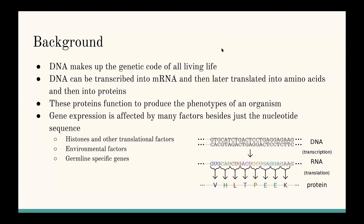I'm going to start with some background information. As you may have learned before, DNA makes up the genetic code of all multicellular organisms on our planet. The central dogma of molecular biology is that DNA can be transcribed into an mRNA sequence, and then once in that mRNA sequence, it can be translated into amino acids. When several amino acids are linked together, they form a polypeptide chain or a protein. Those proteins function to produce the phenotypes of an organism — a phenotype being basically the outward appearance of a certain trait. For example, I have brown hair, so my phenotype for hair color would be brown.